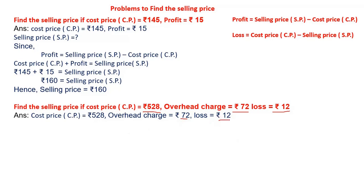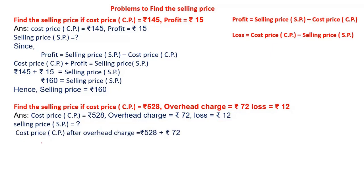They are asking us to calculate the selling price, so selling price is equal to question mark. Before going to calculate the selling price, they are given the overhead charge. Because of that we need to calculate the cost price of the article after the overhead charge. Cost price after the overhead charge is equal to rupees 528 plus rupees 72. After adding these two I will get the answer as rupees 600. This is the final cost price of that given article.